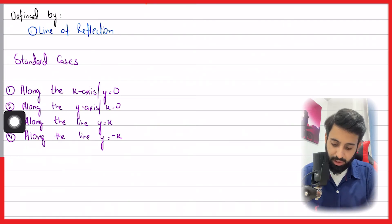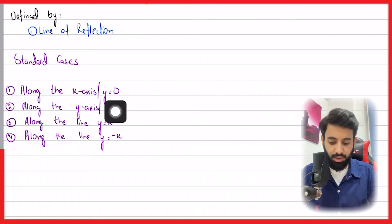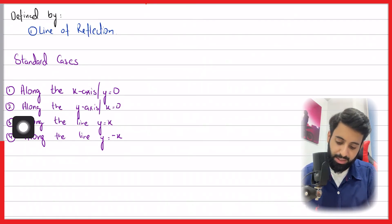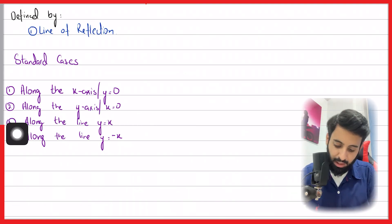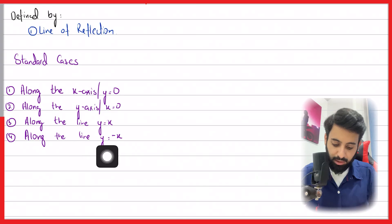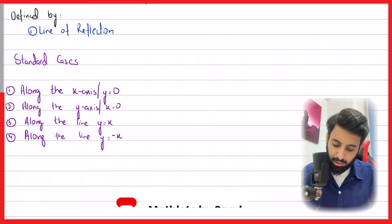There are some standard cases. One is along the x-axis, which is y equals zero. That's the equation of the x-axis. Along the y-axis, which is x equals zero, the vertical axis. Along the line y equals x, and along the line y equals minus x. These are some standard cases for which we have some standard rules. We're going to look at these rules one by one.